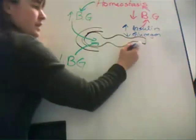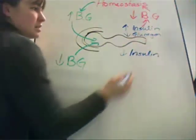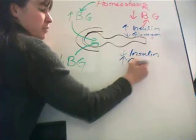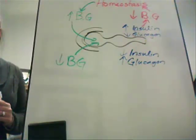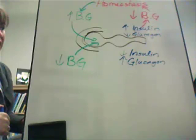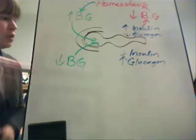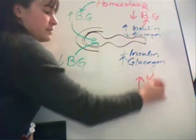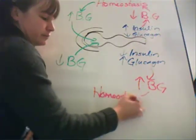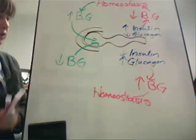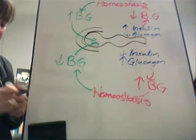When blood glucose levels are low, insulin amounts decrease — the beta cells stop producing insulin — and the alpha cells pick up their production of glucagon. When glucagon levels elevate, they target the liver to begin release of stored glycogen, which liberates glucose into the bloodstream. Blood glucose levels rise and return to homeostasis again.